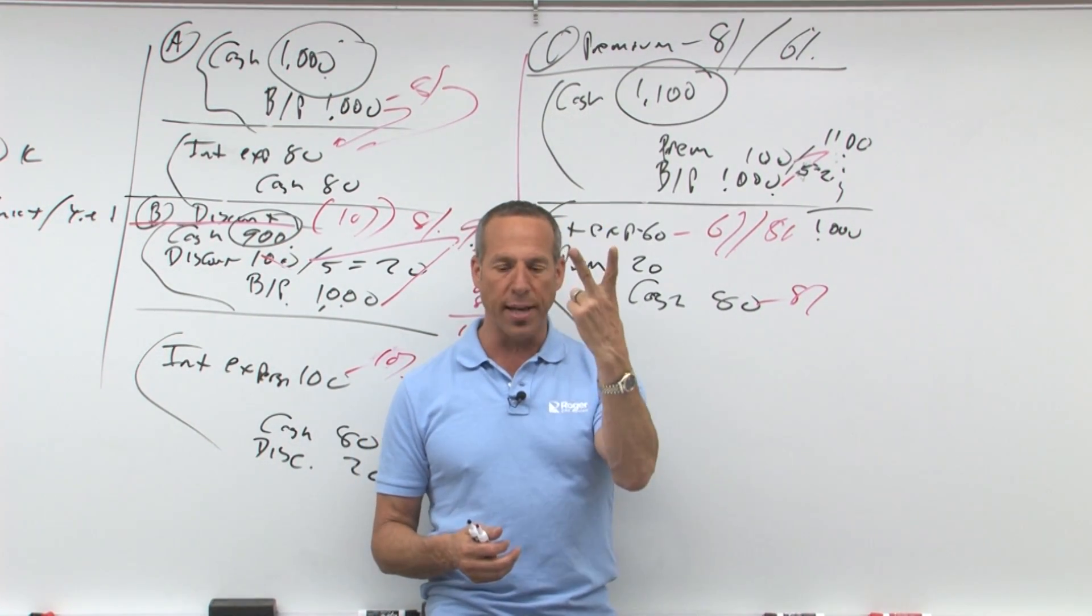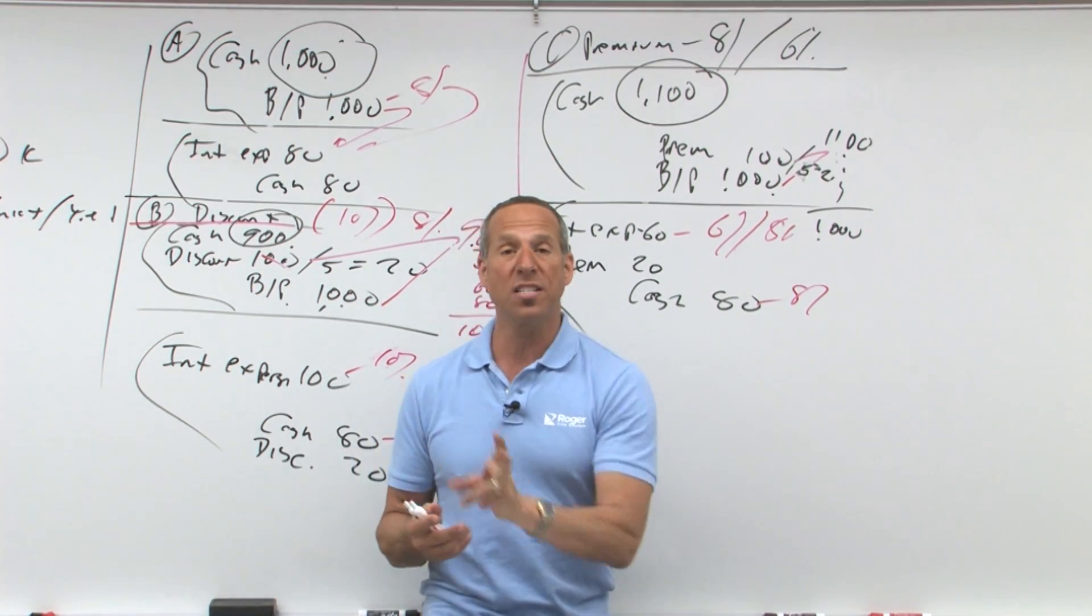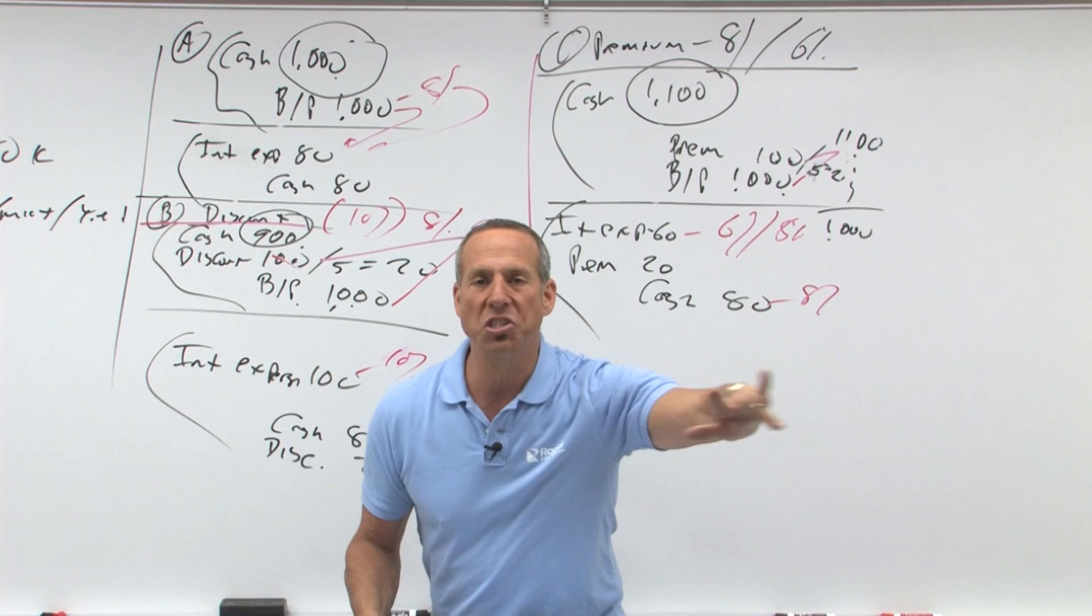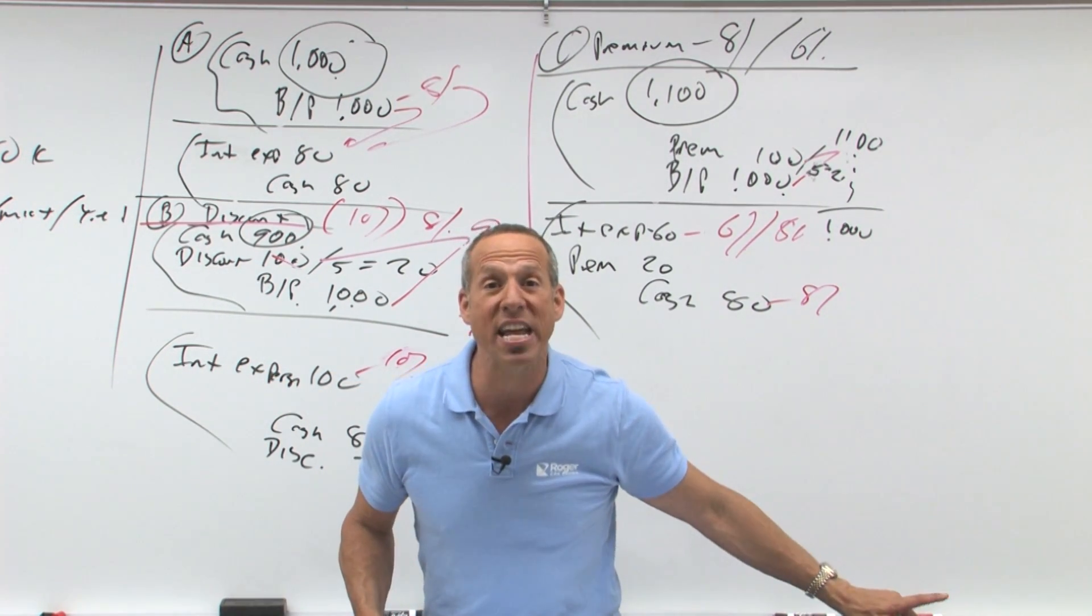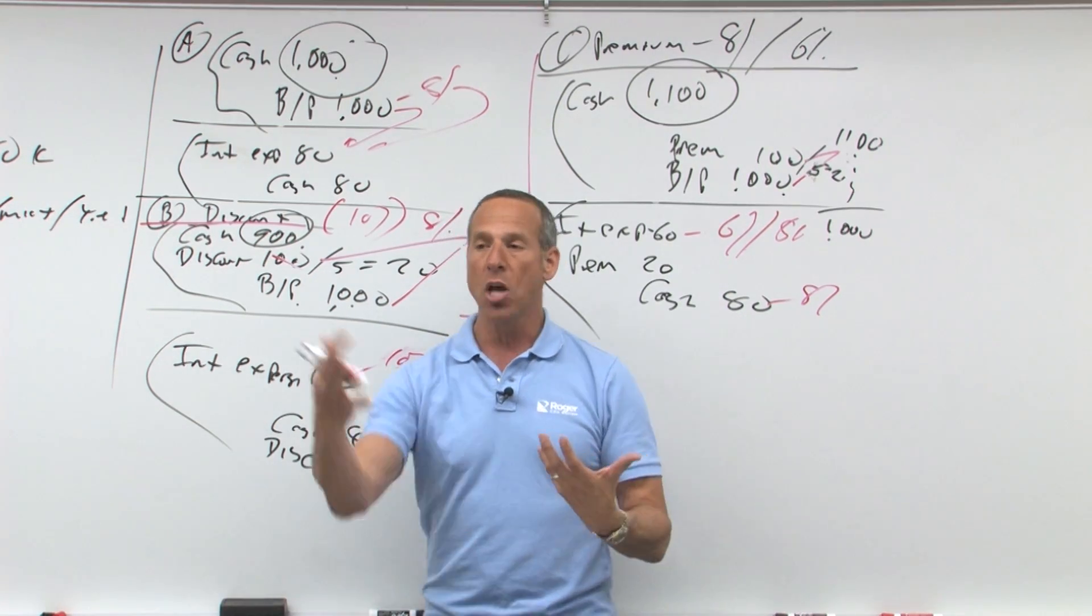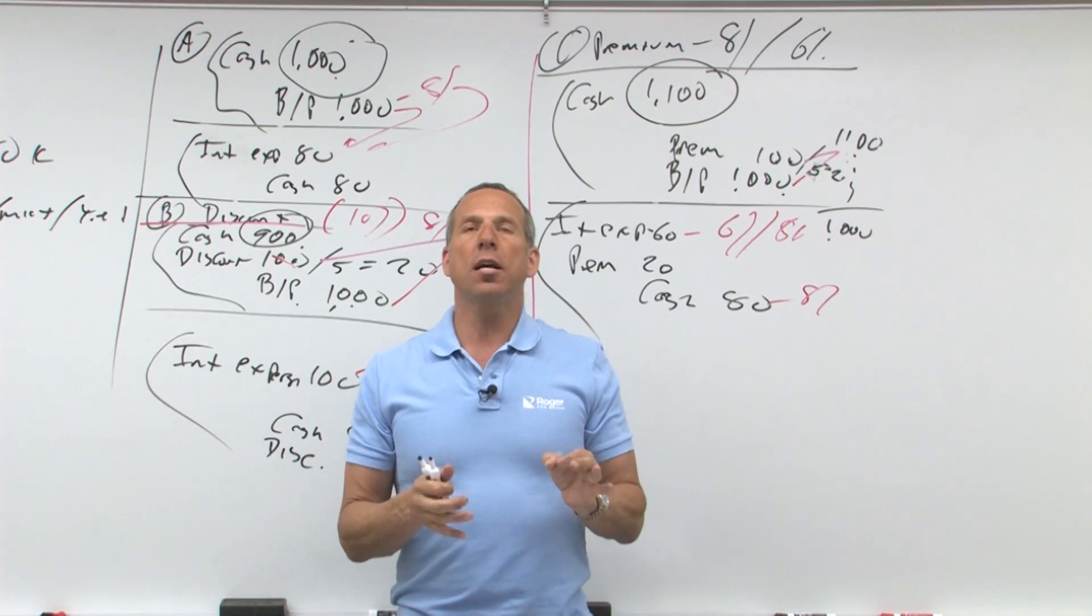That means we're present valuing two things. We're present valuing the face as a lump sum. We're present valuing the 80, when you have an equal amount to be received or paid, that's called an annuity. So what we have to do is present value the annuity to see what that value is. When you add those two up, that's how much we should charge you.